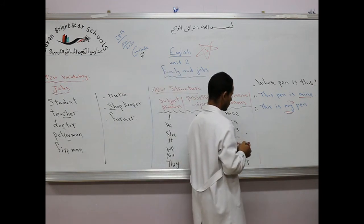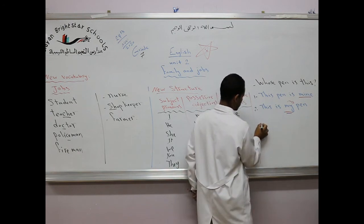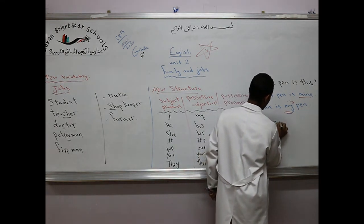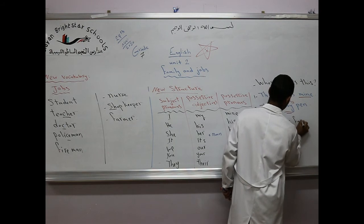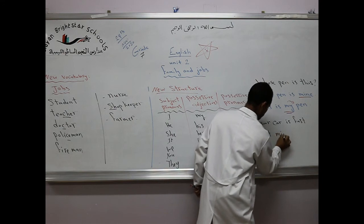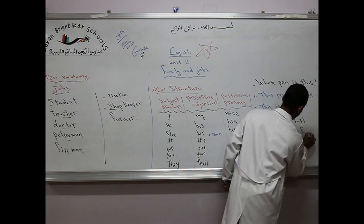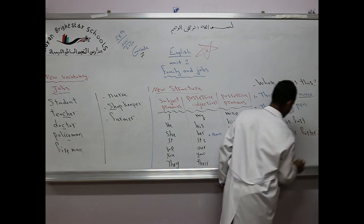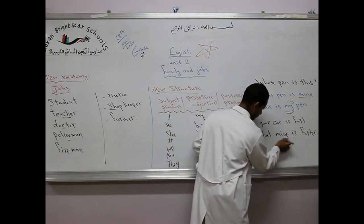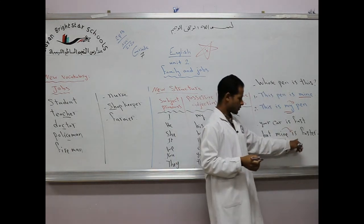So we use the possessive adjectives before nouns and possessive pronouns at the end of the sentence or before the verb. So we can say, your car is fast, but mine is faster.